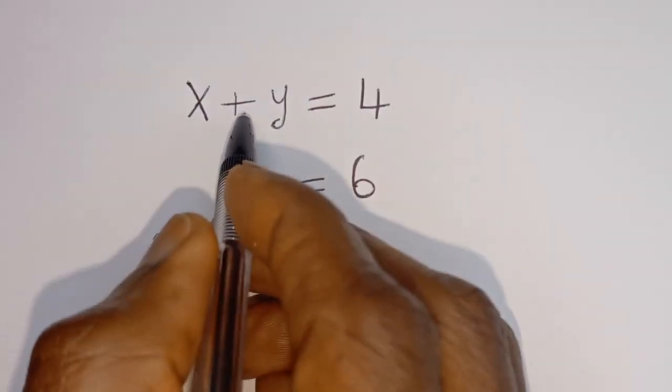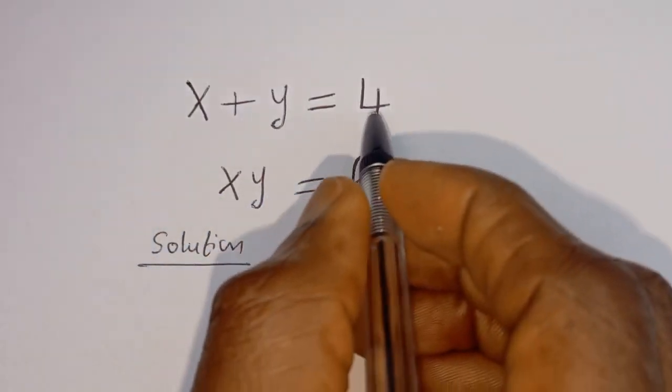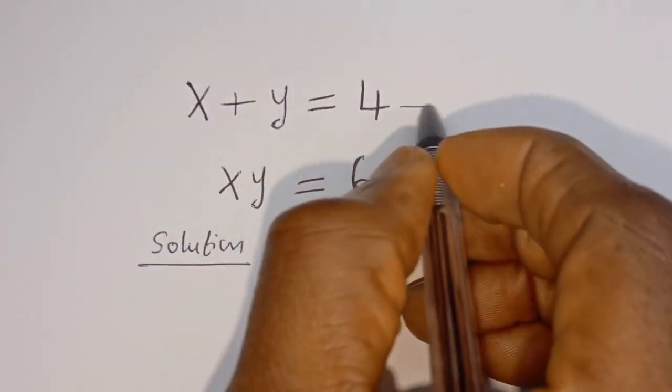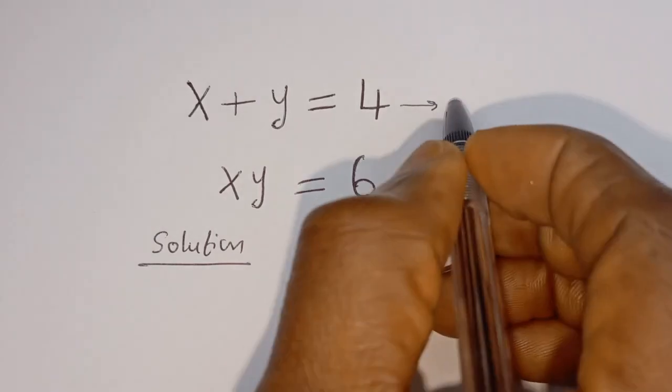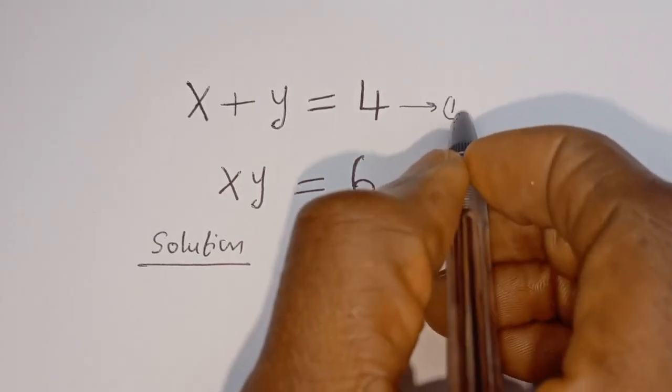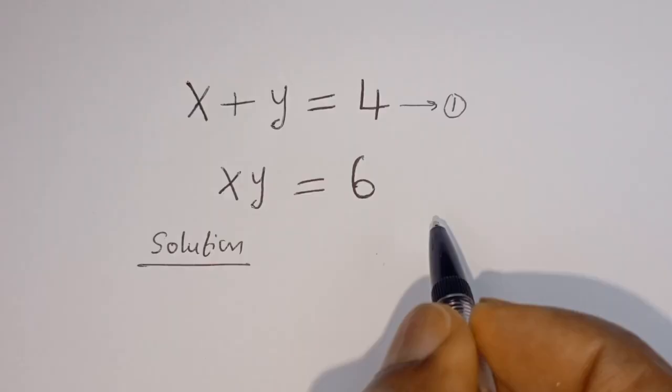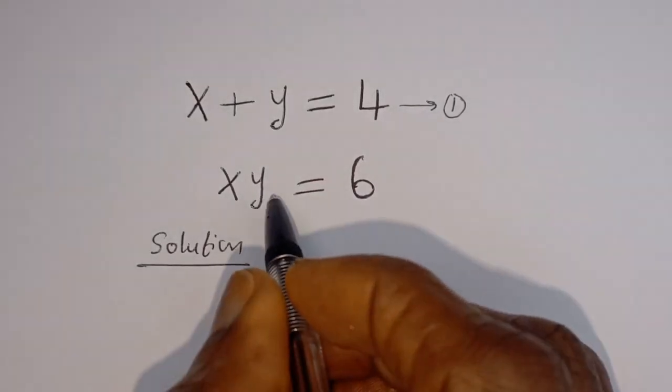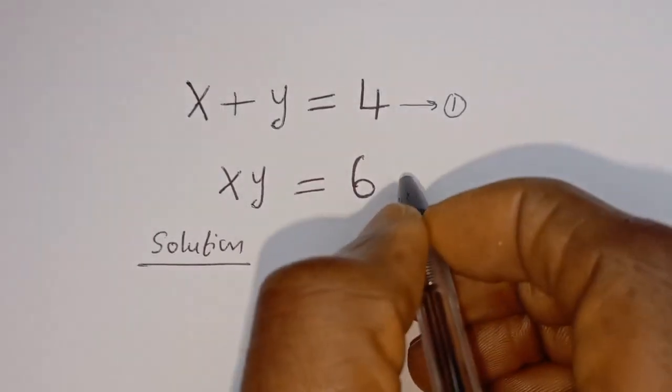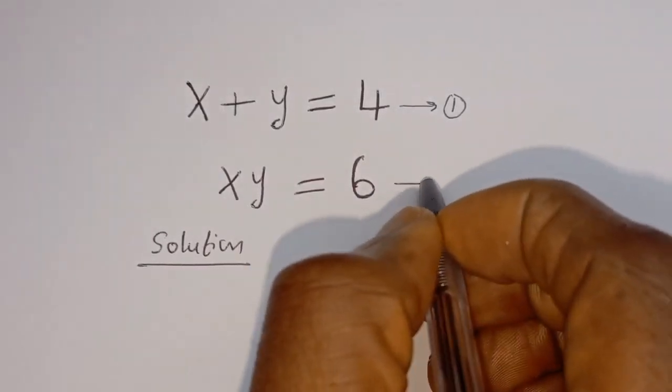Then x plus y is equal to 4 — let's call this equation 1. And x times y is equal to 6 — let's call this equation 2.